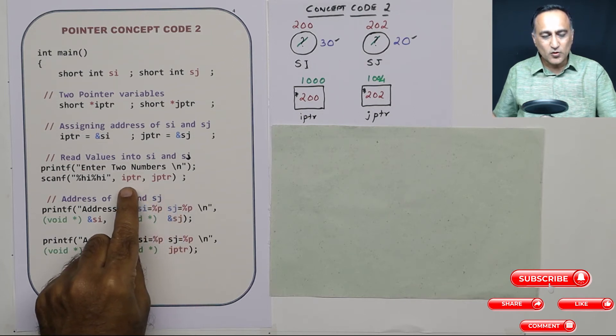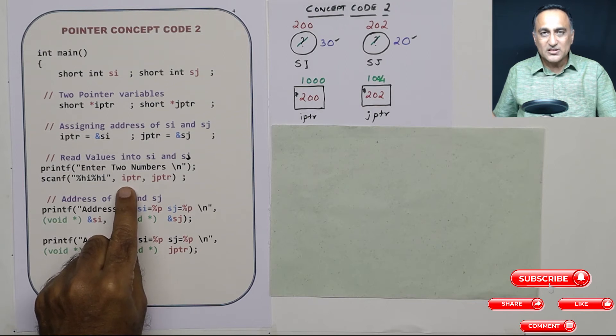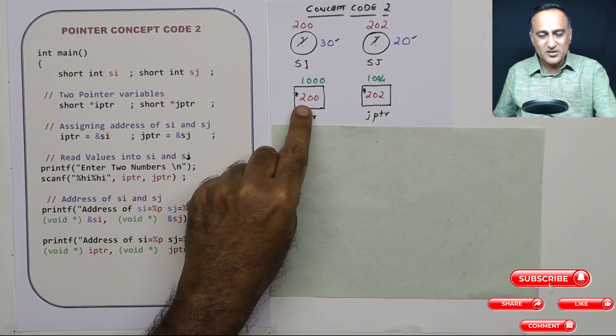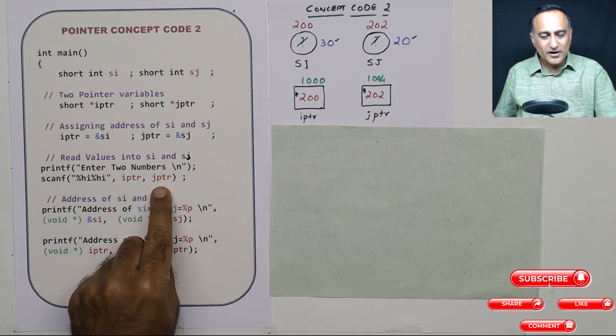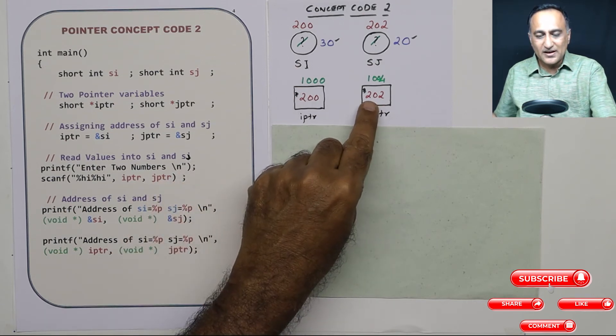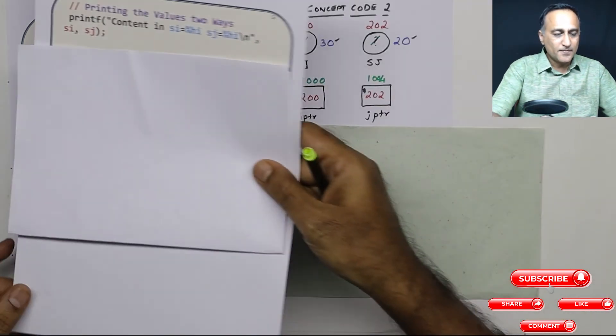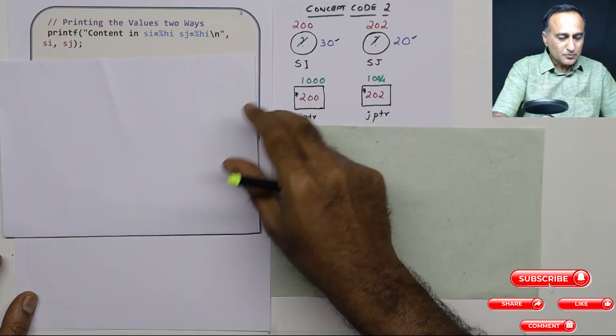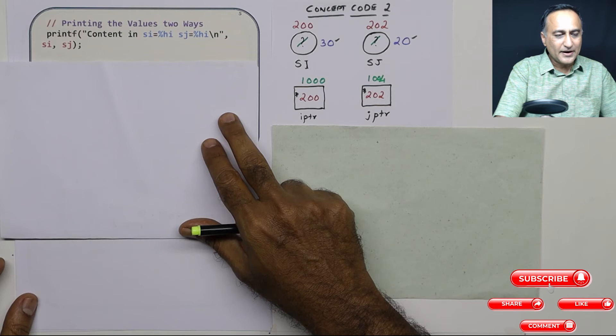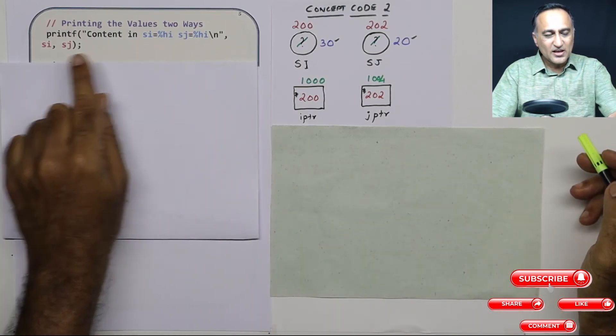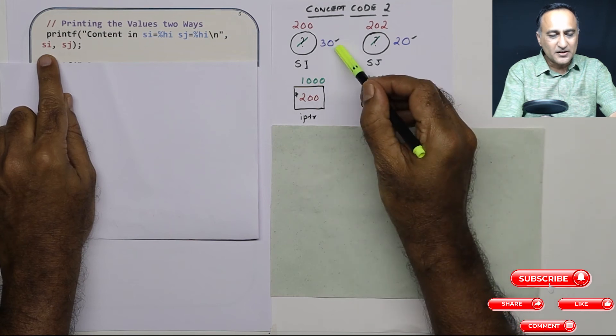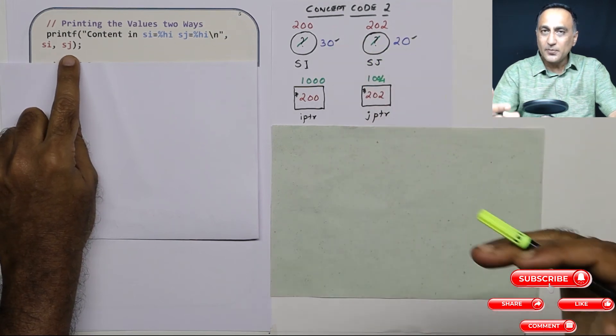When we did a scanf, I am assuming the user entered 30 followed by 20. So 30 got stored at the address which was contained in IPTR, at address 200. And at address 202 which JPTR contained, 20 got stored. So now when I go ahead and try to print the values of SI and sj, if I print SI, it will print 30. If I print sj, it will print 20.